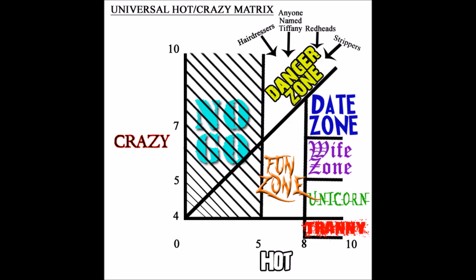Now, above an 8 hot and between about a 7 and a 5 crazy, this is your wife zone. When you meet this girl, you should consider a long-term relationship. This zone is not scaled to size. This is a representation and not a pie chart showing you how many of these people are out there. This is simply a representation of what you're after. You want to be 5 to 7 crazy, above an 8 hot. That's your wife zone.